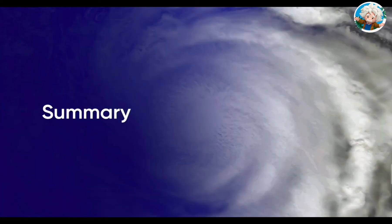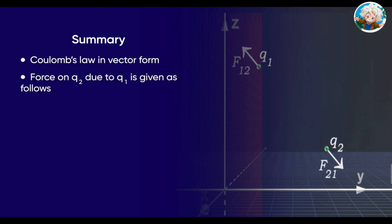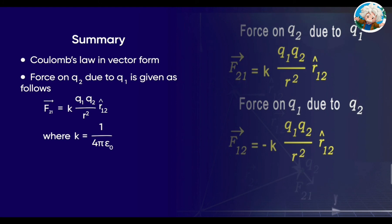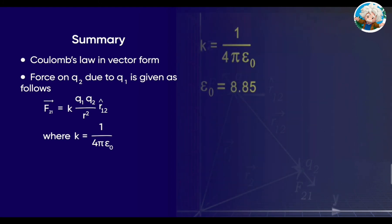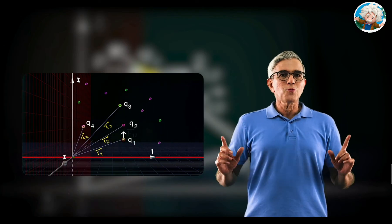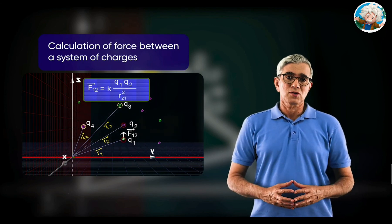Let's quickly summarize what we have learned in this session. We studied Coulomb's law in vector form. According to this law, the magnitude of the force on charge q2 due to q1 is given by k times the product of the charges divided by the square of the distance between them. The constant of proportionality k equals 1/(4πε₀). The direction of the force is from one to two, represented by unit vector r̂₁₂. ε₀ is called the permittivity in vacuum and its value is 8.85 × 10⁻¹² C²/(N·m²). So far we have learned to calculate the force between two isolated charges — stay tuned to find out how we calculate the force between a system of charges.